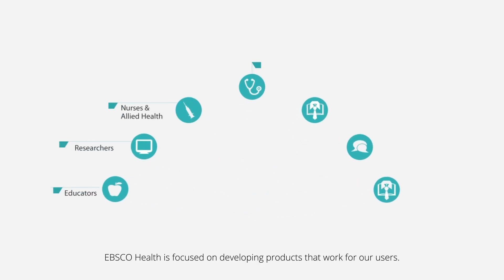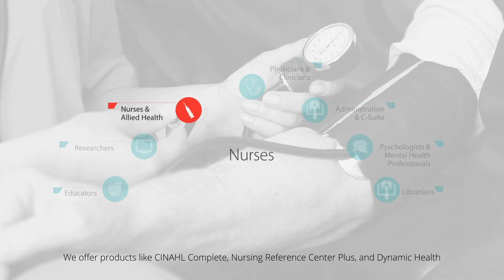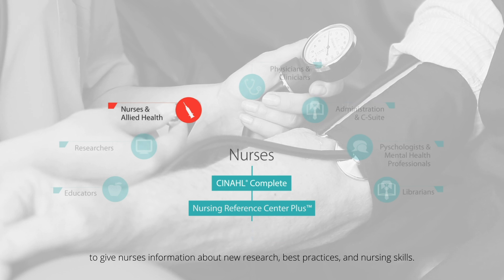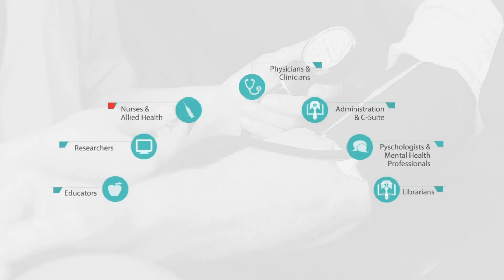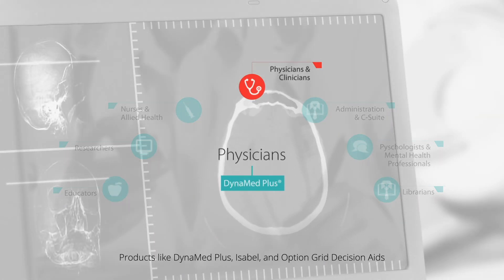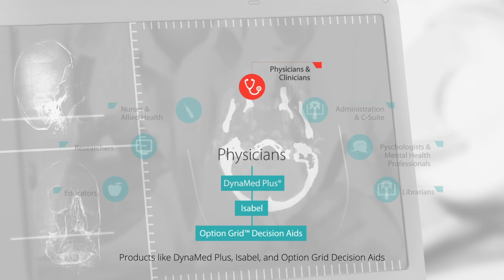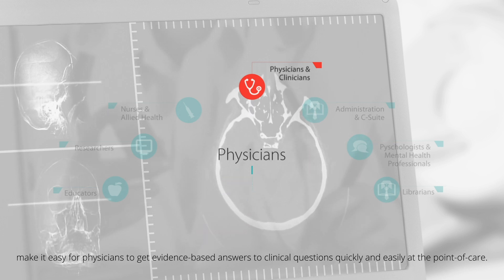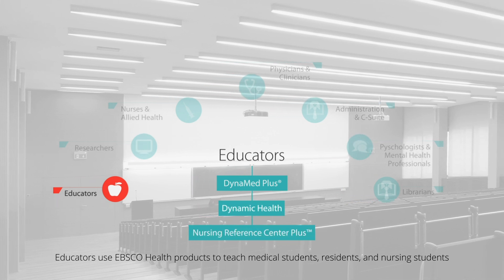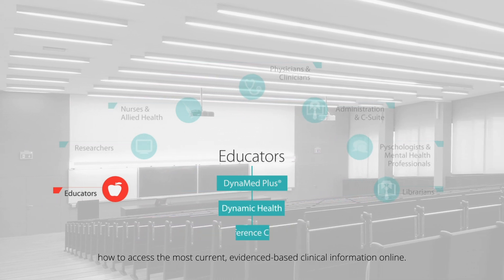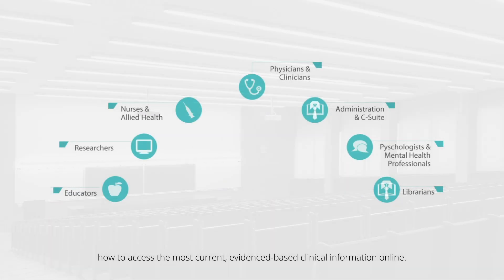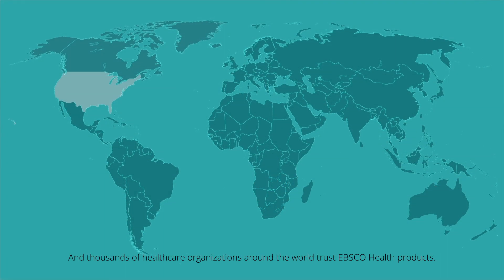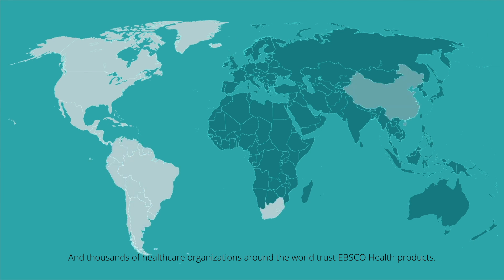EBSCO Health is focused on developing products that work for our users. We offer products like CINAHL Complete, Nursing Reference Center Plus, and Dynamic Health to give nurses information about new research, best practices, and nursing skills. Products like Dynamed Plus, Isabel, and Option Grid Decision Aids make it easy for physicians to get evidence-based answers to clinical questions quickly and easily at the point of care. Educators use EBSCO Health products to teach medical students, residents, and nursing students how to access the most current evidence-based clinical information online. Librarians look to EBSCO Health to support the research needs of faculty. And thousands of healthcare organizations around the world trust EBSCO Health products.